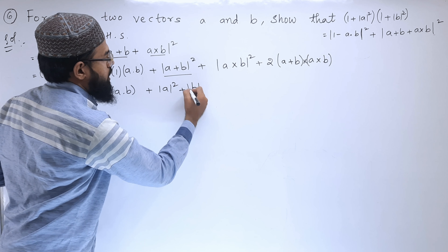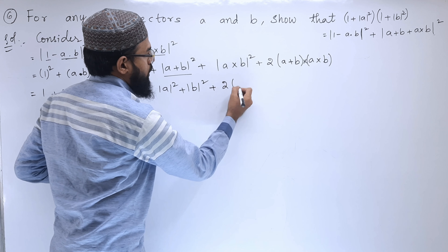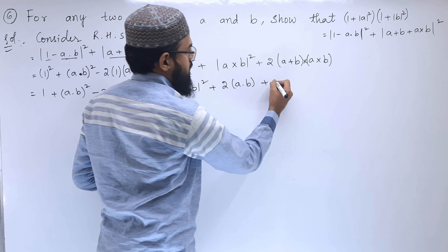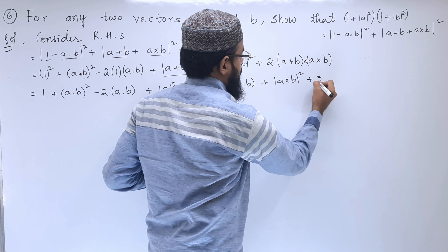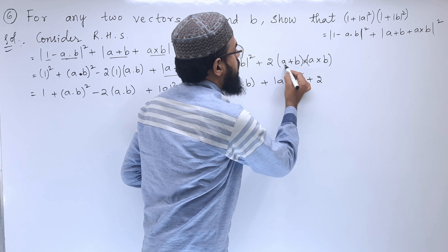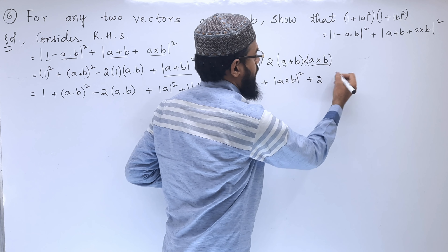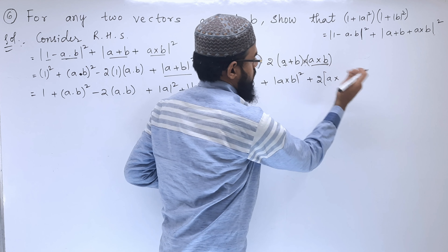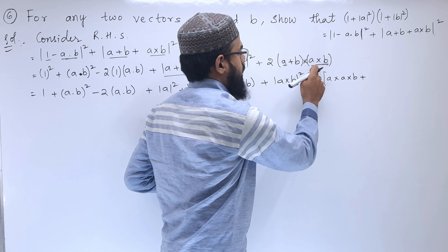|a + b|² + |a×b|² + 2(a + b)·(a×b). Then from the first expansion: 1 + (a·b)² - 2(a·b).